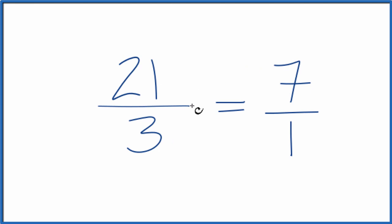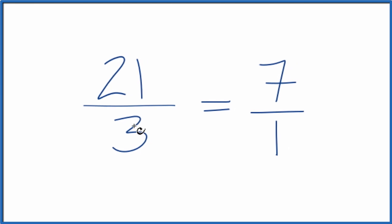Divide 21 by 3, get 7. Divide 3 by 3, we get 1. So we've simplified the fraction 21 over 3.